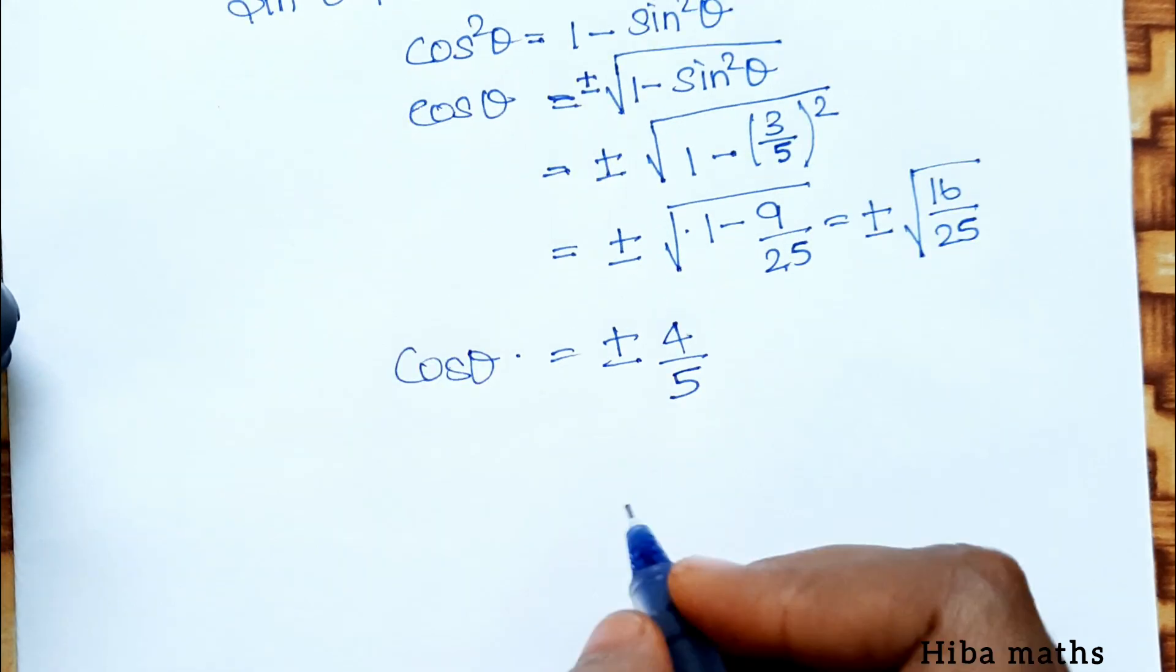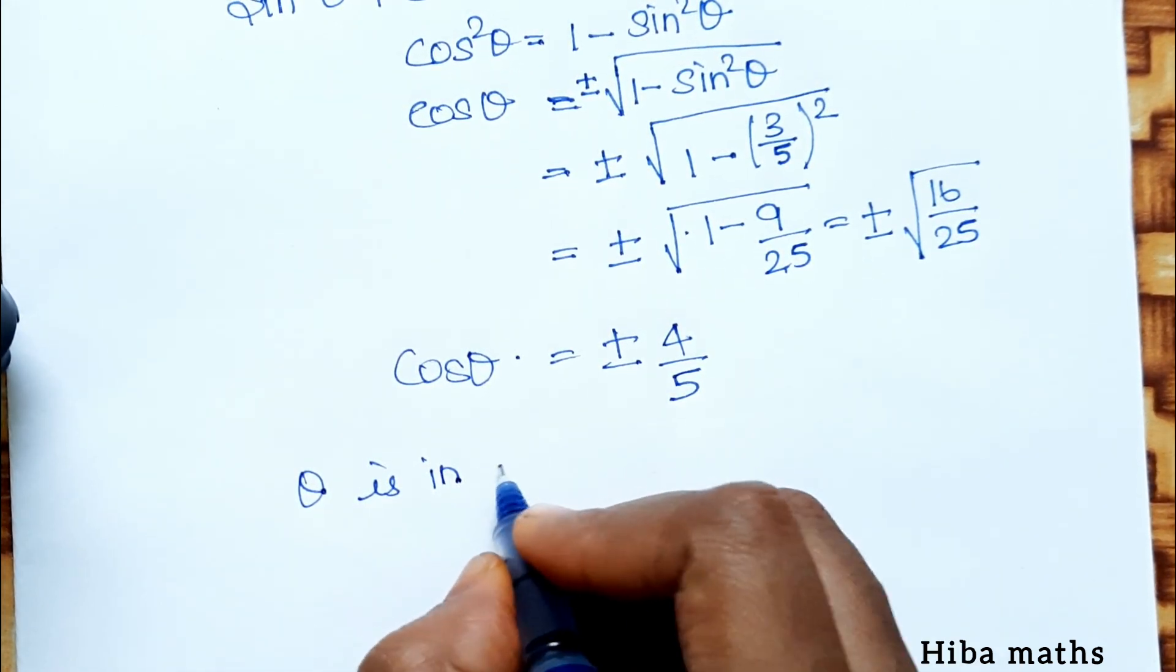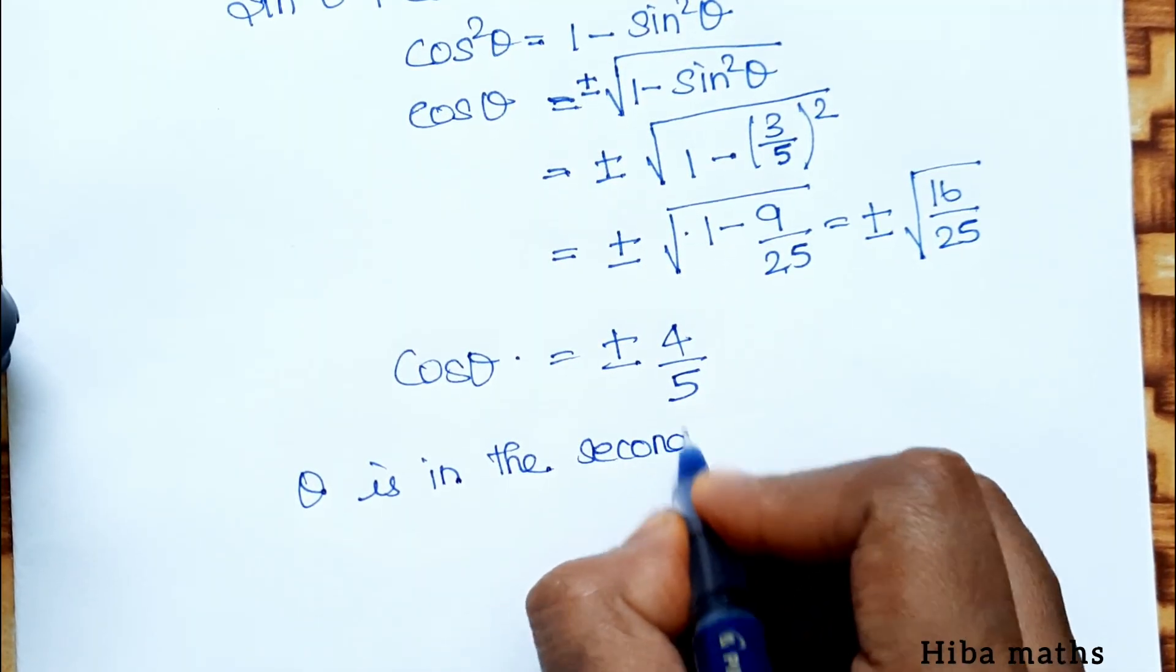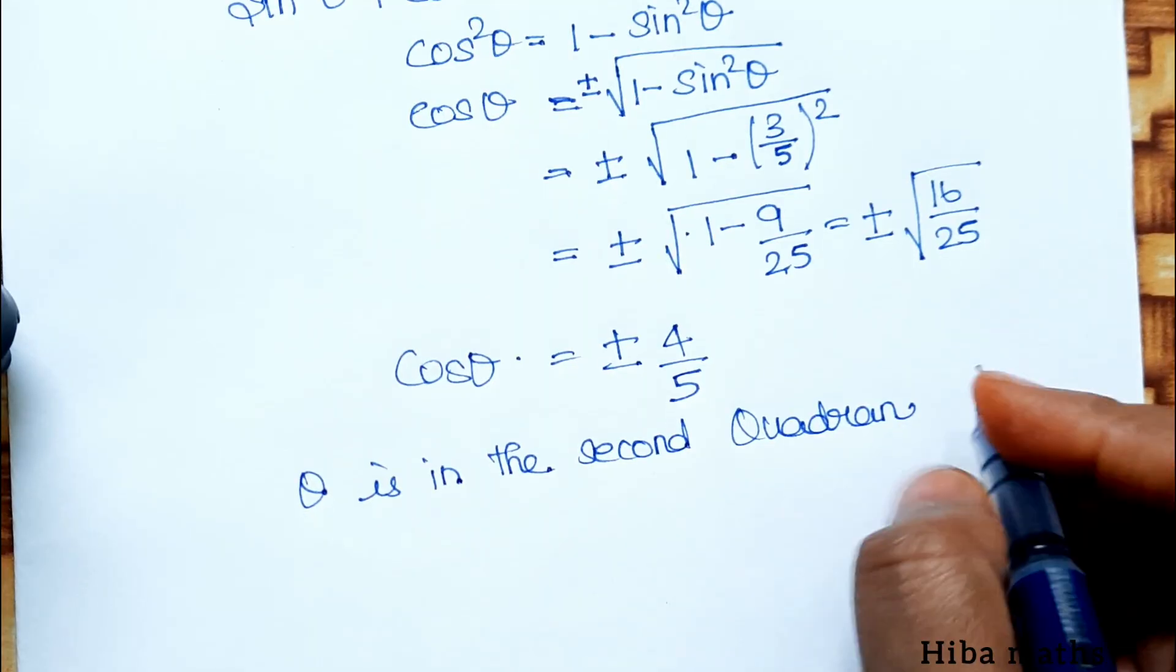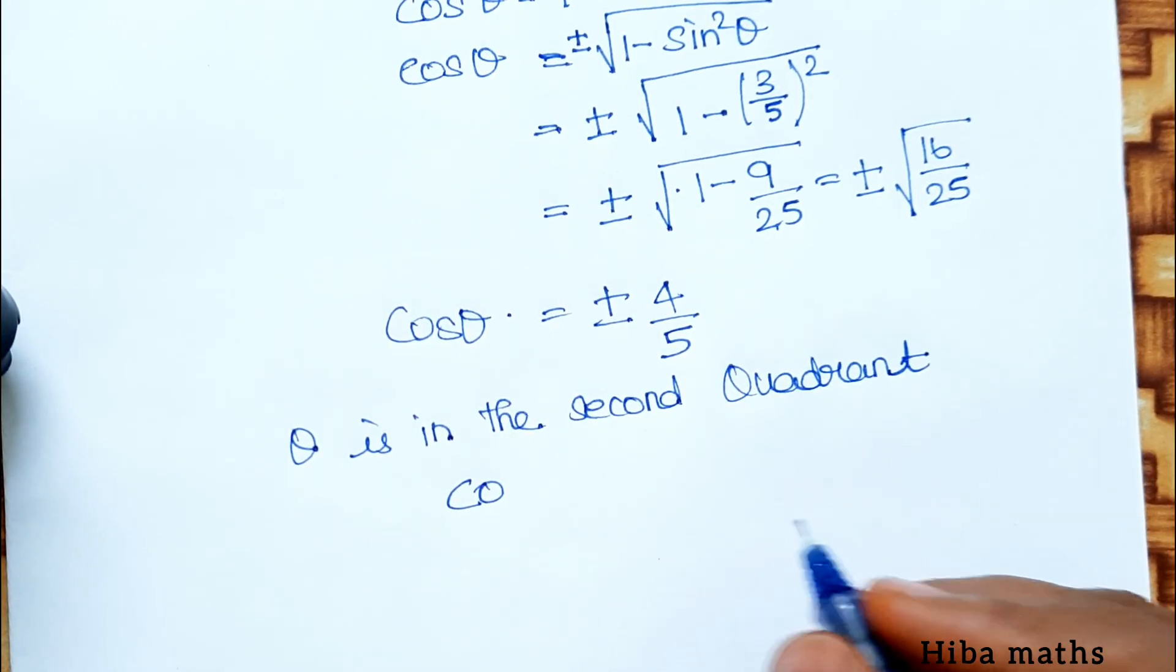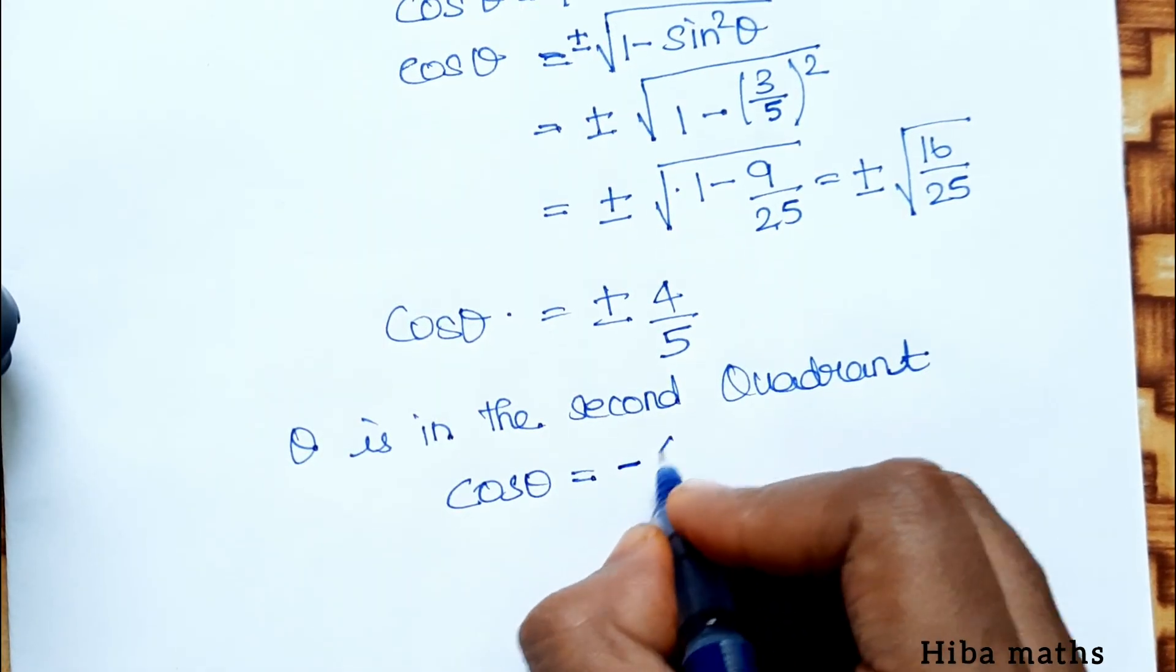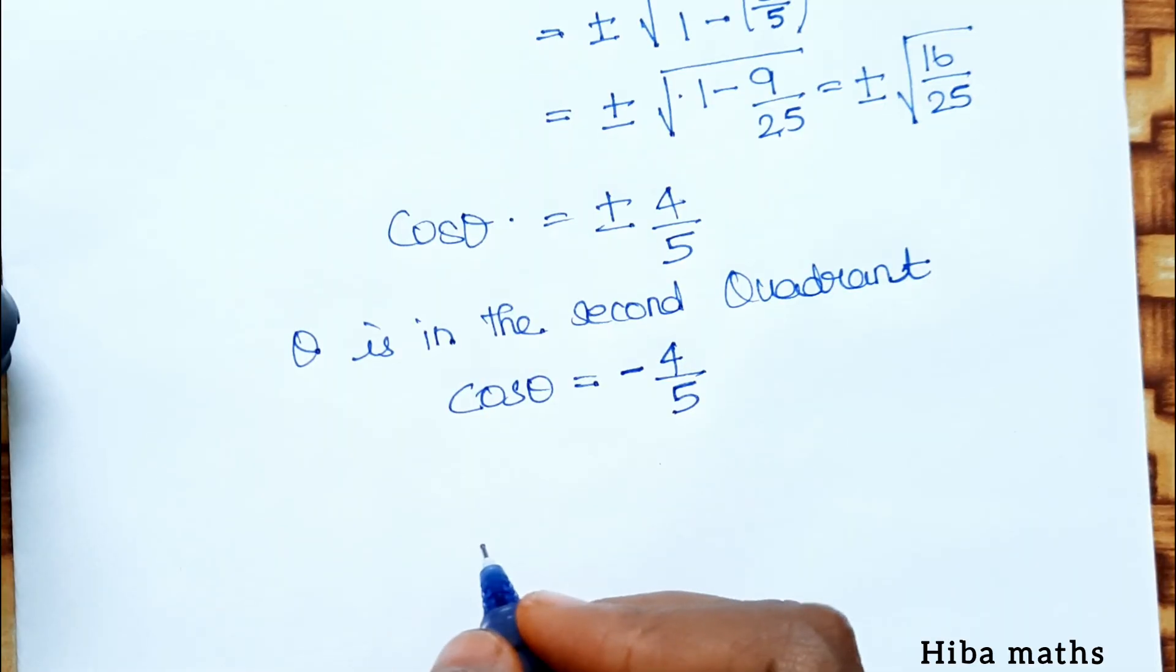Now, since angle θ is in the second quadrant, cos θ is negative. So cos θ equals minus 4 by 5.